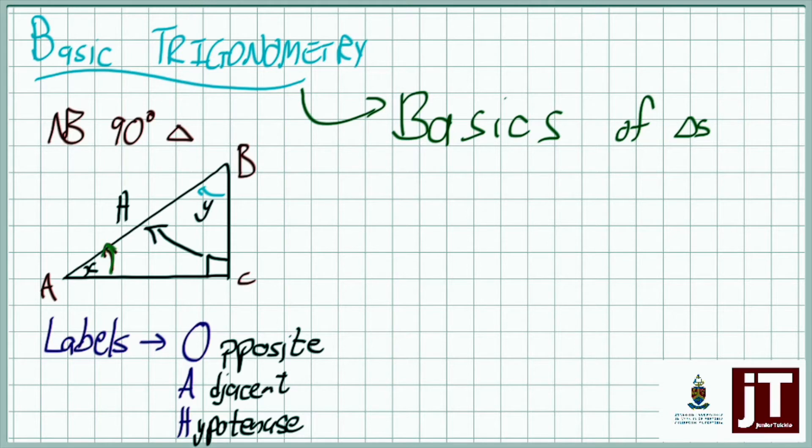For instance, if we look from angle A, the adjacent will be the angle right next to that angle A, and then the opposite will be the side opposite that angle A or that little x. But if we look from Y, then the adjacent is side BC and the opposite is side A because it is opposite that angle.